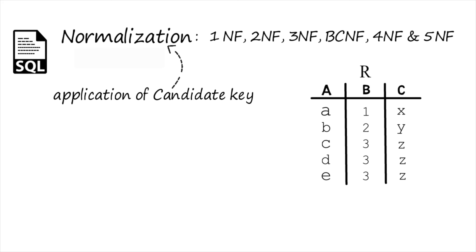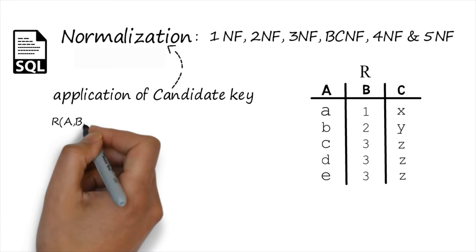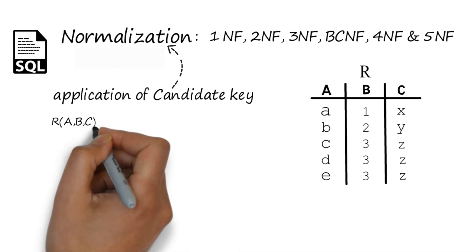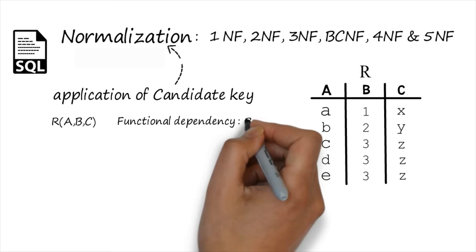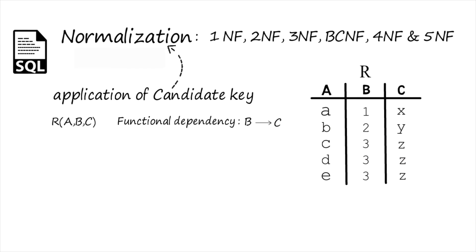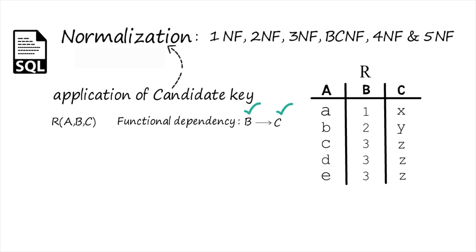Creating a table in a database management system is not so easy. Before creating any table, you have to find out which attributes should be kept together. For this table R, say R is a particular table in which we have three attributes: A, B, and C.